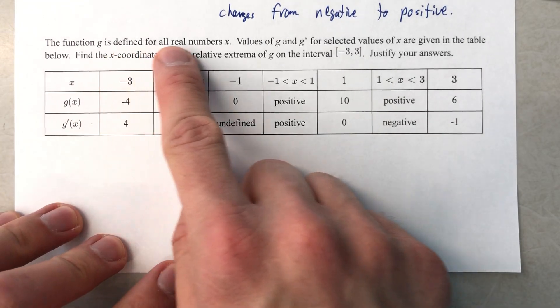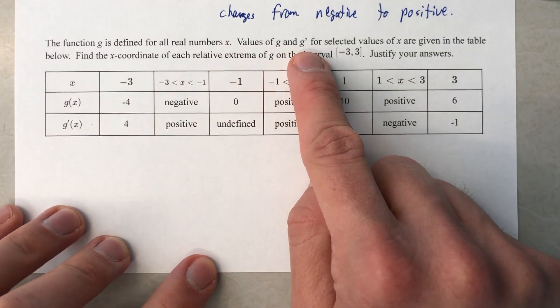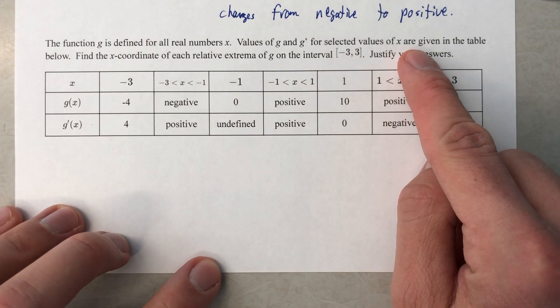The function g is defined for all real numbers x. Values of g and g prime for selected values of x are given in the table below.